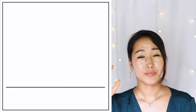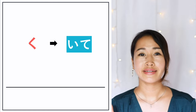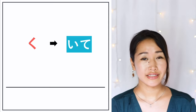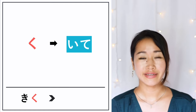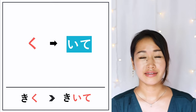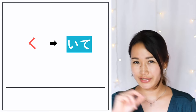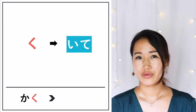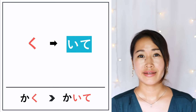Next, the verbs that end with KU change into いて. For example, 'to listen' — 聞く — would be 聞いて. And how about 'to write' — 書く? It would be 書いて.